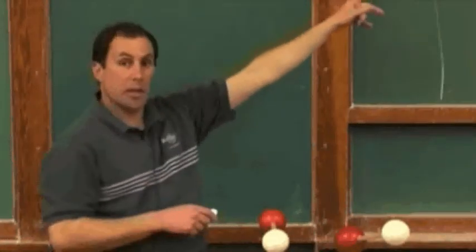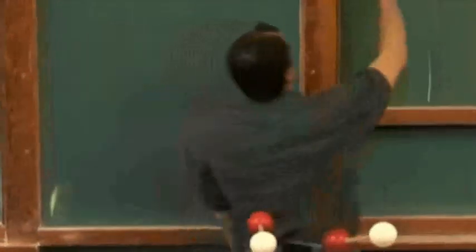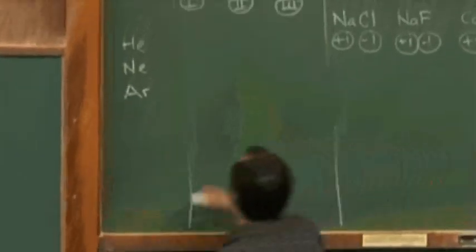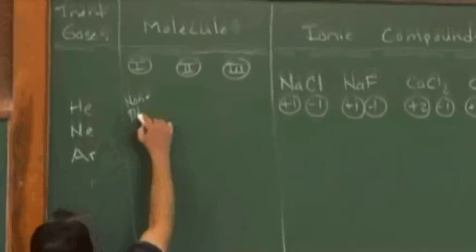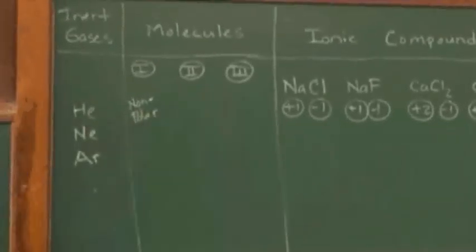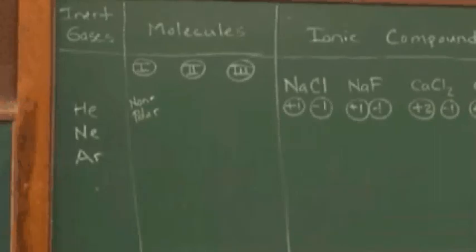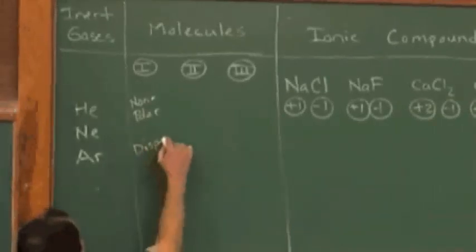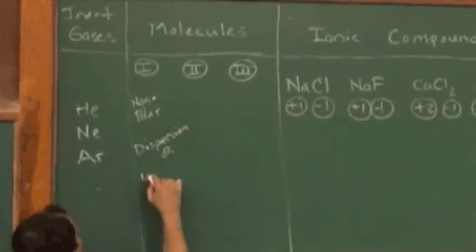Molecules, remembering that these are nonmetals, fall into three different categories to separate low melting points to high melting points. Type 1 are going to be your nonpolar. These nonpolar molecules, just like the inert gases, have very little attraction between them. We call them dispersion or London forces.